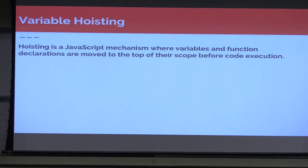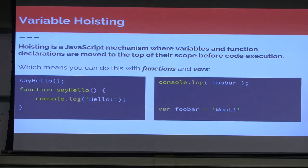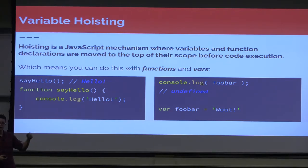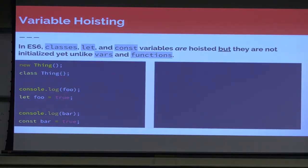Variable hoisting. Hoisting is a JavaScript mechanism where variables and functions get pulled up to the top of their scope before code execution. That means you can run a function before it actually gets defined, because at runtime that function is going to be brought up to the top before it even gets called. Same thing with vars — if we do a console.log of foobar before it's declared, we're going to get undefined, because what it's actually doing is hoisting it up to the top and setting its value and type equal to undefined. But in ES6, you can't do that with classes, let variables, or const. They are hoisted, but they're not initialized yet, unlike vars and functions.